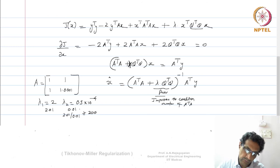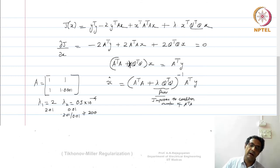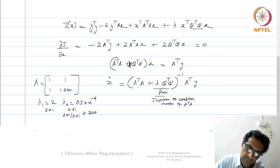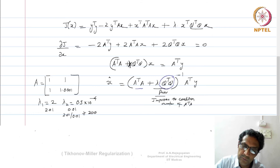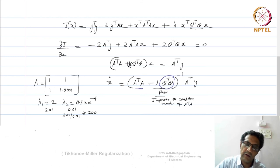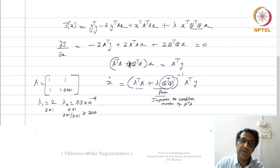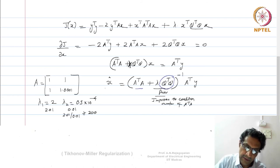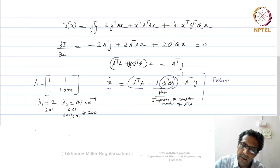The point is, we cannot arbitrarily add numbers to make a matrix stable. But here, to AᵀA we are adding λQᵀQ, which is not arbitrary — we are bringing in a principled prior. Something sensible is being added to AᵀA to make it stable. Even if originally AᵀA was not invertible, this addition lends invertibility and improves its condition number, allowing us to solve for x̂, which is now a regularized solution.